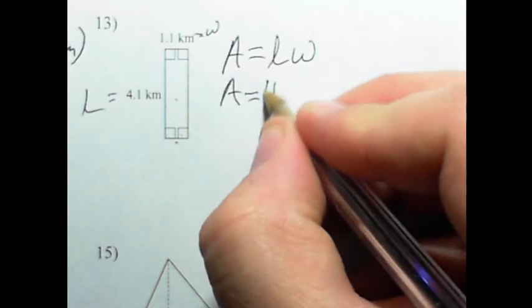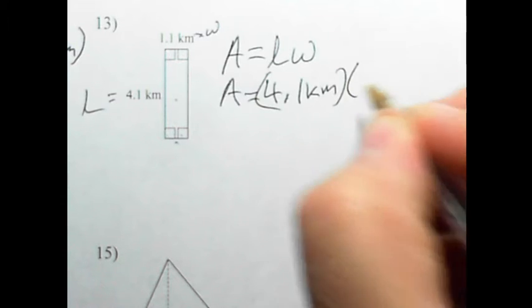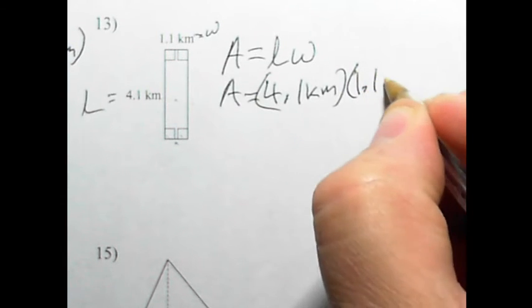So then the area of this rectangle is 4.1 kilometers times 1.1 kilometers.